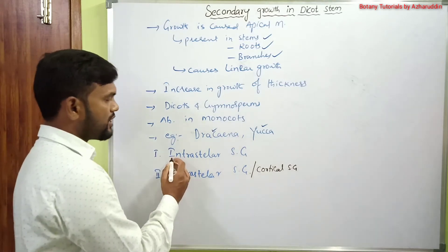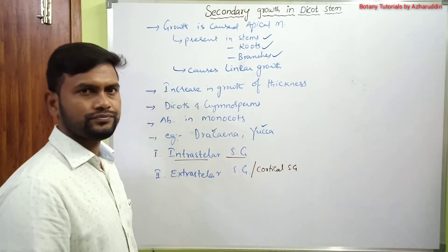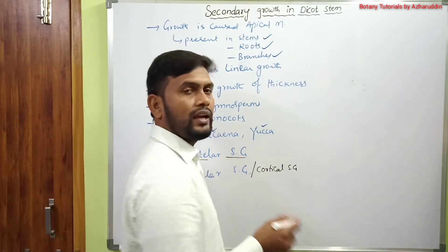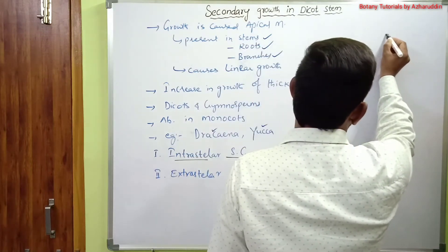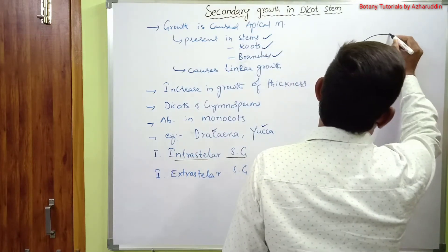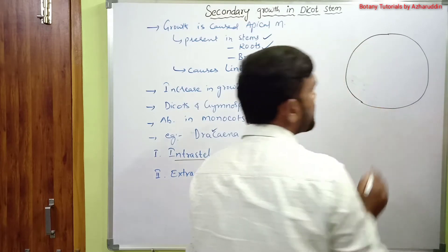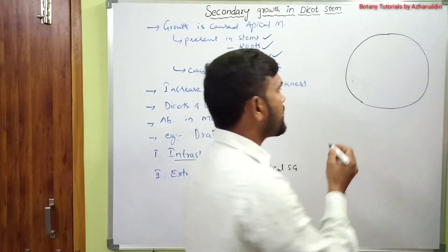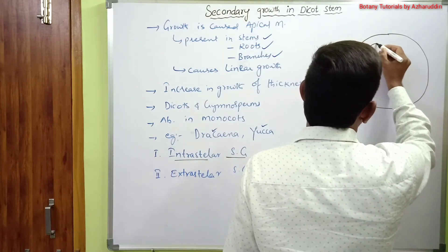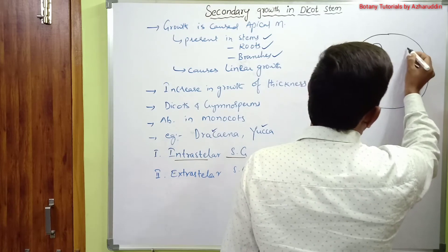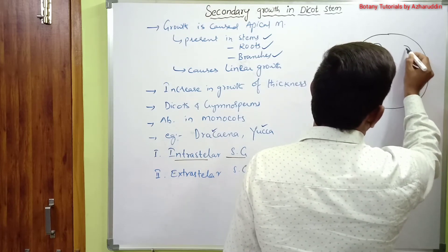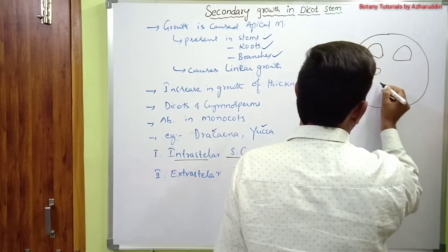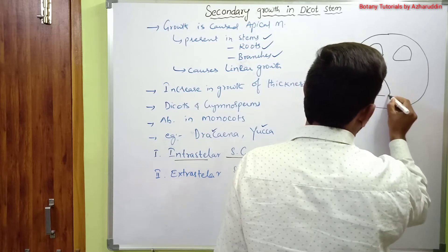Now I will explain intrastelar secondary growth. In the transverse section of a primary dicot stem, in the stele, the vascular bundles are arranged in the form of a circle or ring. In the primary dicot stem, vascular bundles are arranged in the form of a ring.